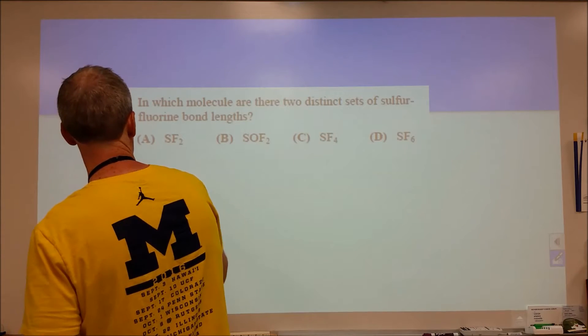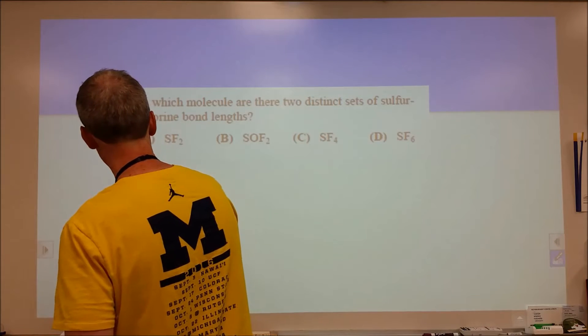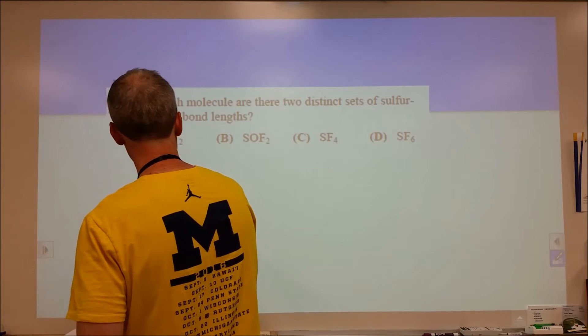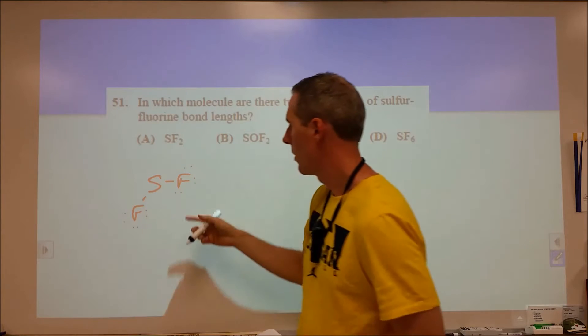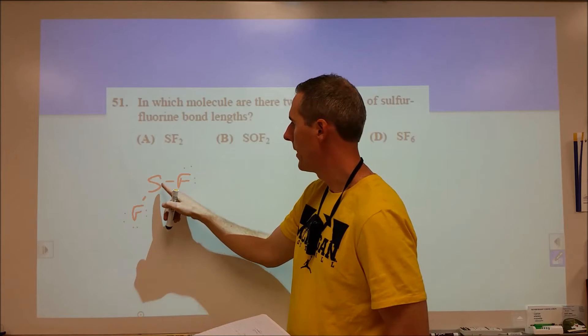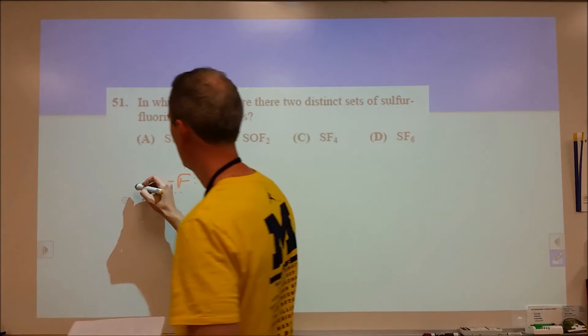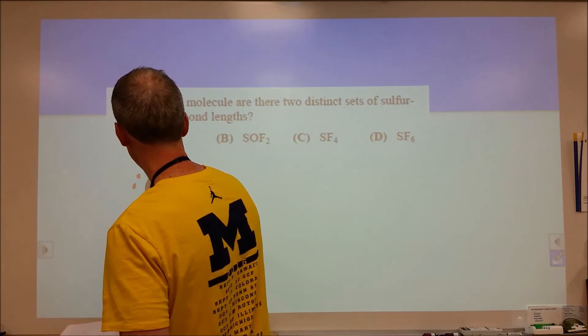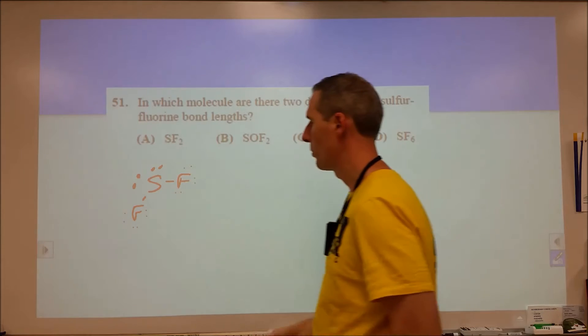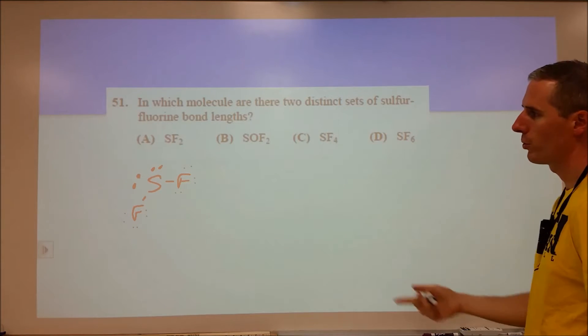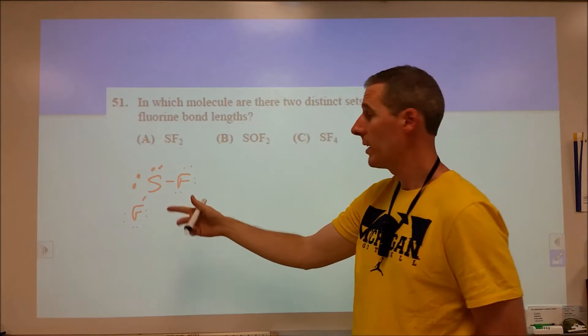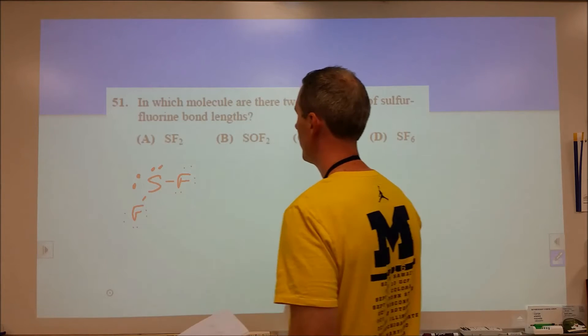Let's draw these Lewis structures really quickly. A good way to do this if you're not familiar with formal charge, just use formal charge. So I'm gonna get my fluorine set and then I'm gonna say okay one, two electrons in the sulfur. So they have a formal charge of zero for a neutral molecule and I need that sulfur to be neutral.